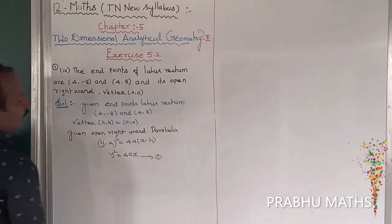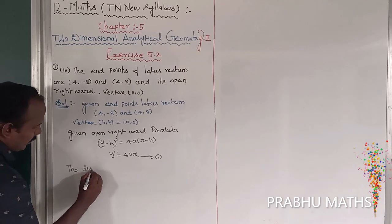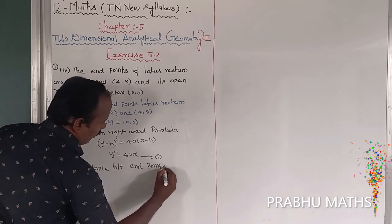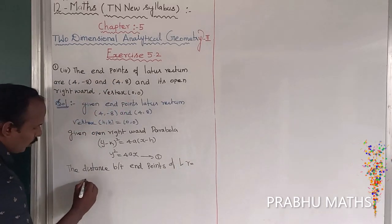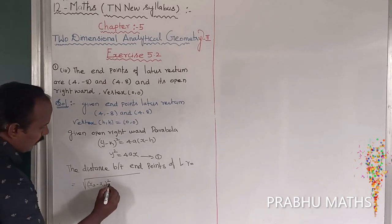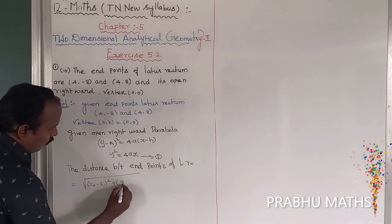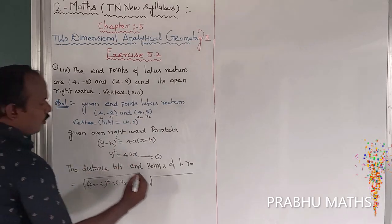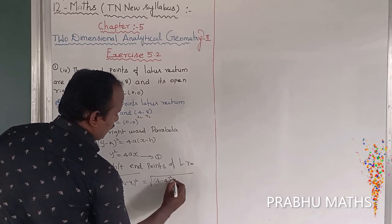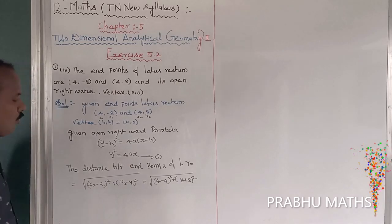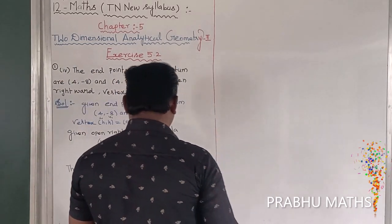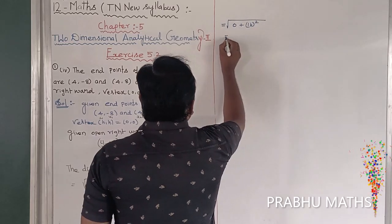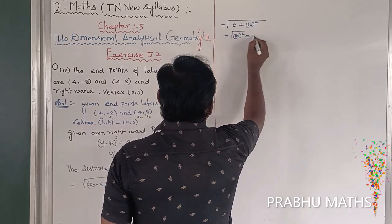Next, the distance between the endpoints of the latus rectum is found using the distance formula: √[(x₂ - x₁)² + (y₂ - y₁)²]. With points (4, -8) and (4, 8): √[(4-4)² + (8-(-8))²] = √[0 + 16²] = √256 = 16.